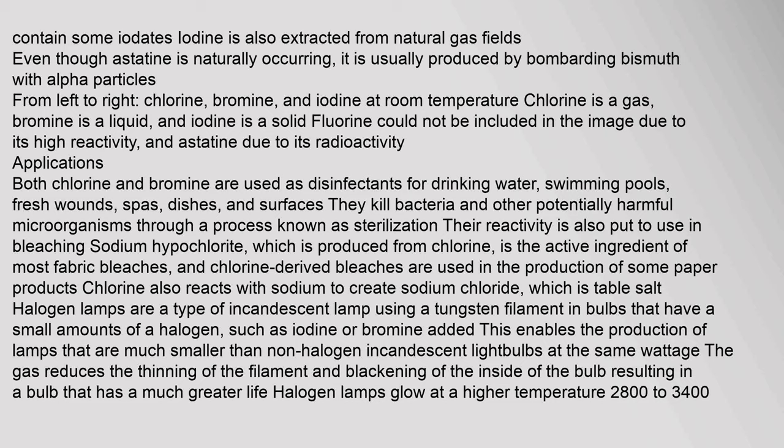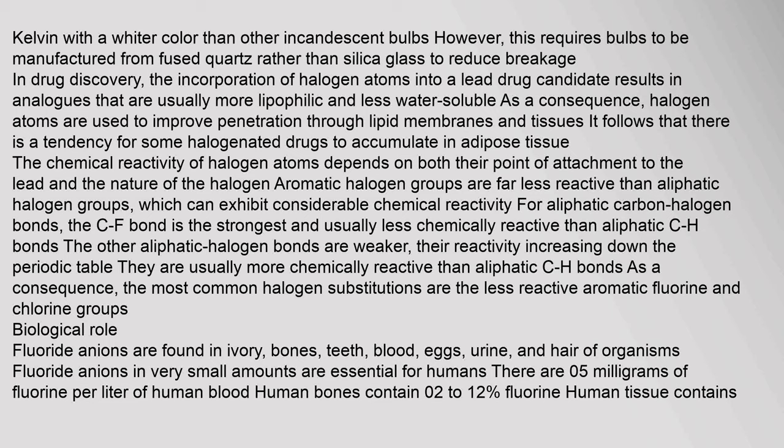Halogen lamps are a type of incandescent lamp using a tungsten filament in bulbs that have a small amount of a halogen, such as iodine or bromine, added. This enables the production of lamps that are much smaller than non-halogen incandescent light bulbs. At the same wattage, the gas reduces the thinning of the filament and blackening of the inside of the bulb, resulting in a bulb with a much greater life. Halogen lamps glow at a higher temperature — 2800–3400 Kelvin — with a whiter color than other incandescent bulbs. However, this requires bulbs to be manufactured from fused quartz rather than silica glass to reduce breakage.